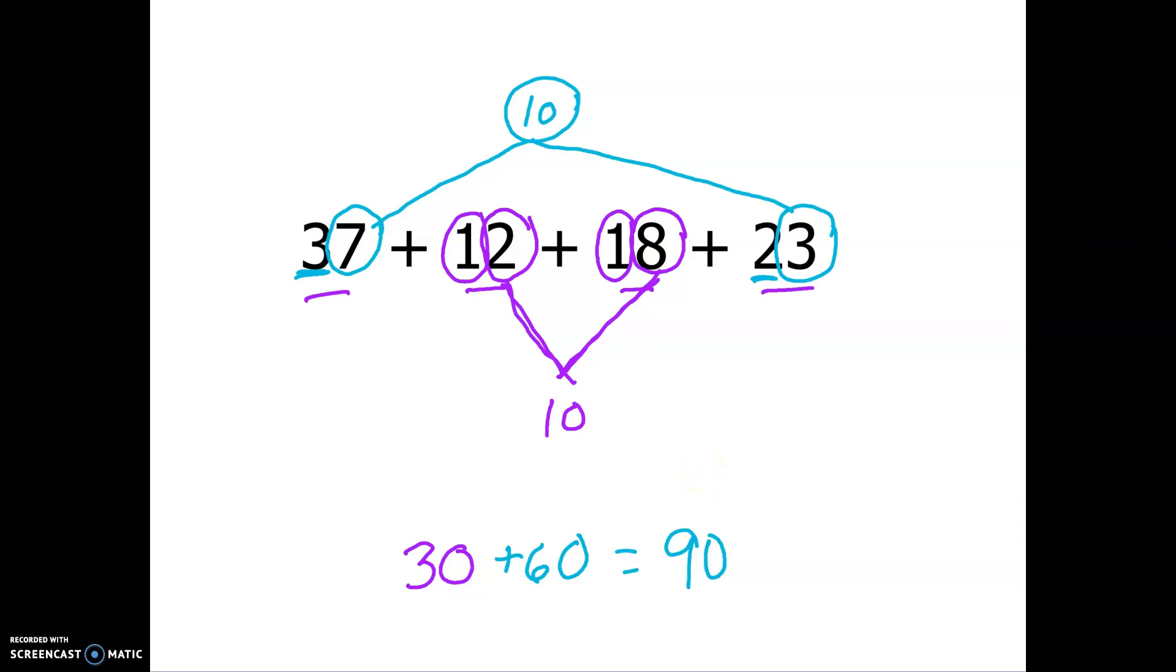So, that means that 37 plus 12 plus 23 is going to be 90. Good job. So, we're going to start with some mental math and fluency.